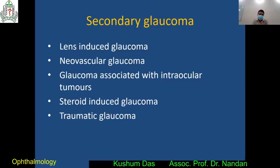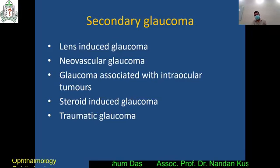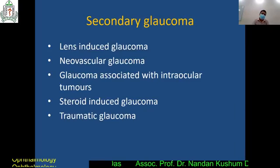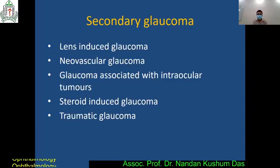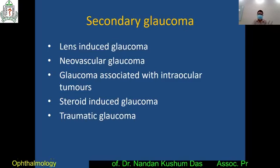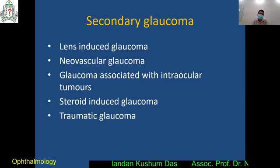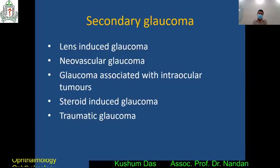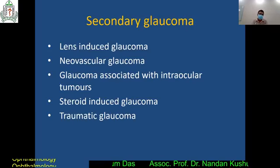Another written and viva question: name some secondary glaucomas. Secondary glaucoma may be open-angle or closed-angle. At the undergraduate level, the important secondary glaucomas you should know are: lens-induced glaucoma, neovascular glaucoma, glaucoma associated with intraocular tumor, steroid-induced glaucoma, and traumatic glaucoma — at least five.